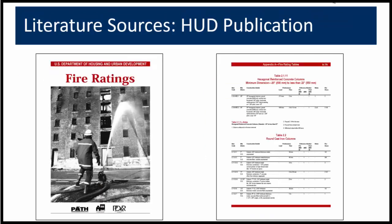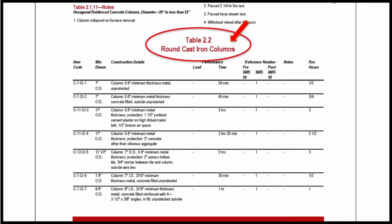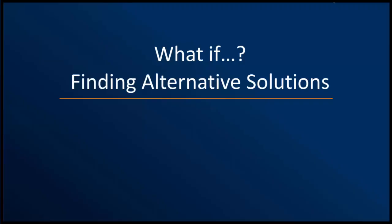I have found this publication — Guideline on Fire Ratings of Archaic Materials and Assemblies by the U.S. Department of Housing and Urban Development — especially helpful in dealing with old buildings where materials and assemblies do not appear in the typical publications. This publication is available in the WJE library. As an example, it shows fire ratings for cast iron columns. But what if, despite all of your efforts of looking for traditional solutions, you're not able to find a published design which represents your condition?